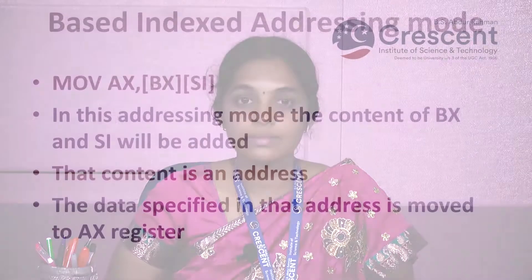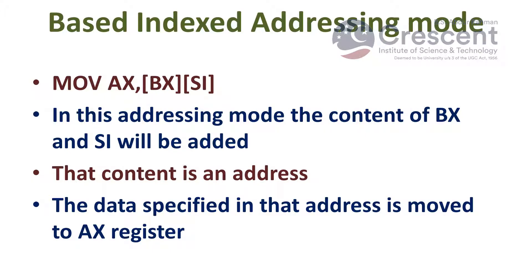Based indexed addressing mode — for example, MOV AX, [BX+SI]. In this addressing mode, the content of BX register and the content of SI register are added. That result is an address, and the data specified at that address is moved into AX register.